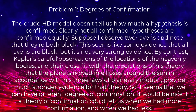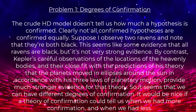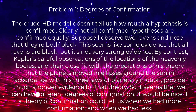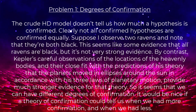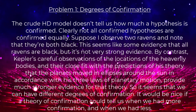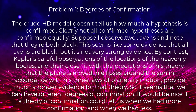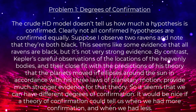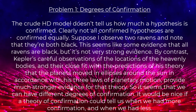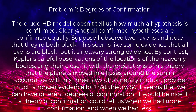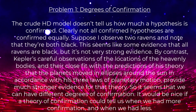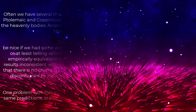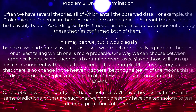There are several problems for this crude version of hypothetical deductivism. Problem one: degrees of confirmation. The crude HD model doesn't tell us how much a hypothesis is confirmed. Suppose I observe two ravens and note that they're both black — this seems like some evidence that all ravens are black, but it's not very strong evidence. By contrast, Kepler's careful observations of the locations of the heavenly bodies, and their close fit with the predictions of his theory that the planets moved in ellipses around the sun, provide much stronger evidence. So it seems we can have different degrees of confirmation.